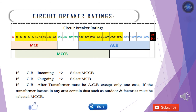Now let's see how we can select a circuit breaker. If you want to select for an outgoing circuit breaker, it's better to select an MCB. For an incomer for a main DB or sub-main DB, depending on the ratings, you can select an MCCB. For high rated currents, it's better to select an ACB — most preferable after the transformer; any panel connected after the transformer can use ACBs.